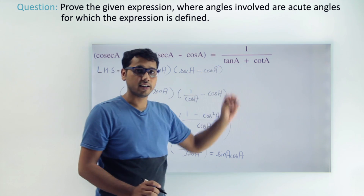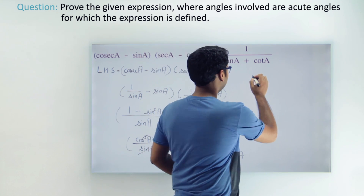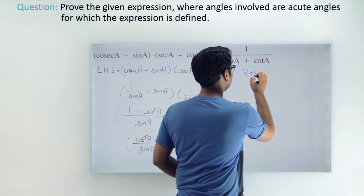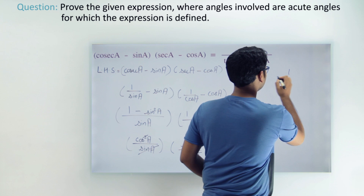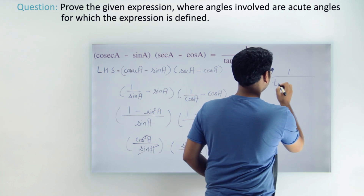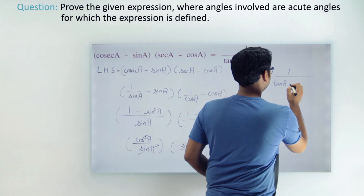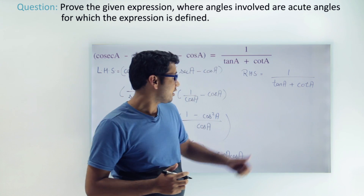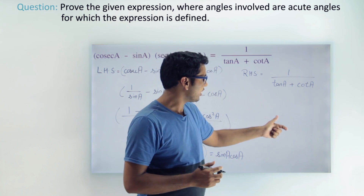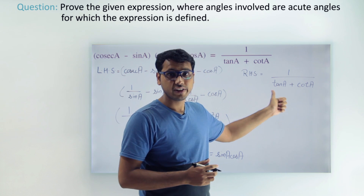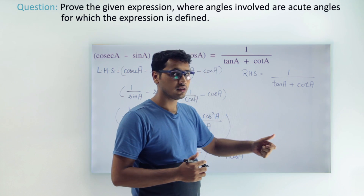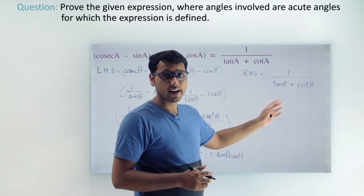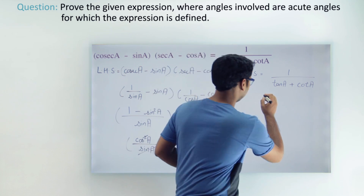We can't simplify the LHS further, so we'll leave it there. Now let's take the RHS, which is 1 divided by (tan a plus cot a). Can we add tan a and cot a directly? We can't, so since we can't proceed further, we'll break tan and cot into sin and cos.